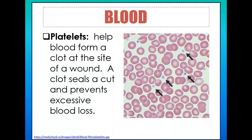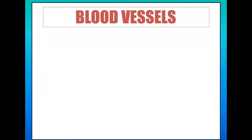So blood has three cell elements: red blood cells (erythrocytes), white blood cells (leukocytes), and platelets, also called thrombocytes, spelled T-H-R-O-M-B-O-C-Y-T-E-S. The other key component of the human circulatory system is the blood vessels. Blood vessels are considered a vascular system — a closed transport system through which blood flows.